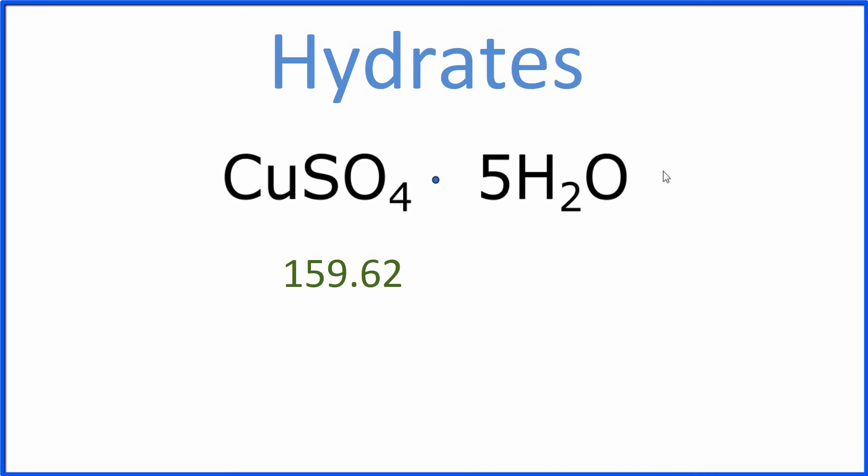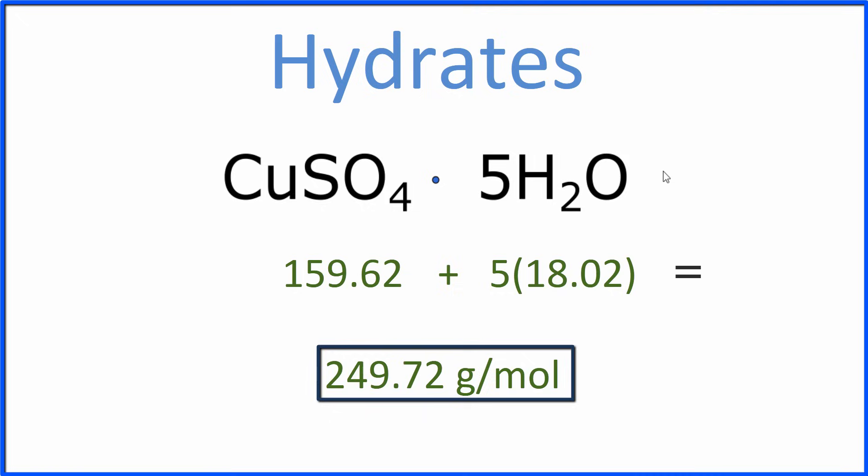Once we have those, we'll add the copper sulfate to 5 times the mass of the water molecule. That's because we have 5 water molecules. We add this all together, and that's the molar mass for copper 2 sulfate pentahydrate.